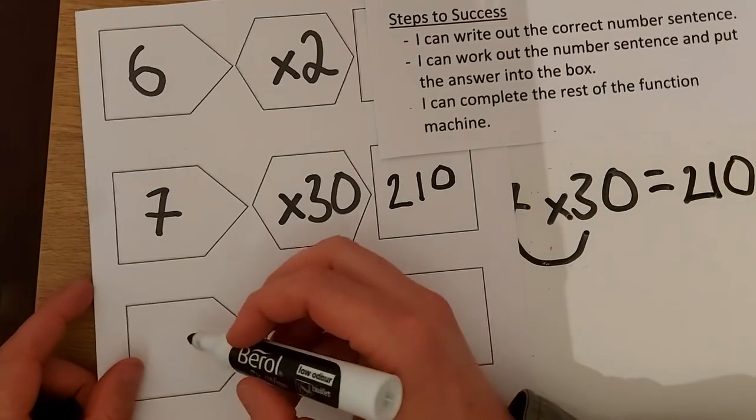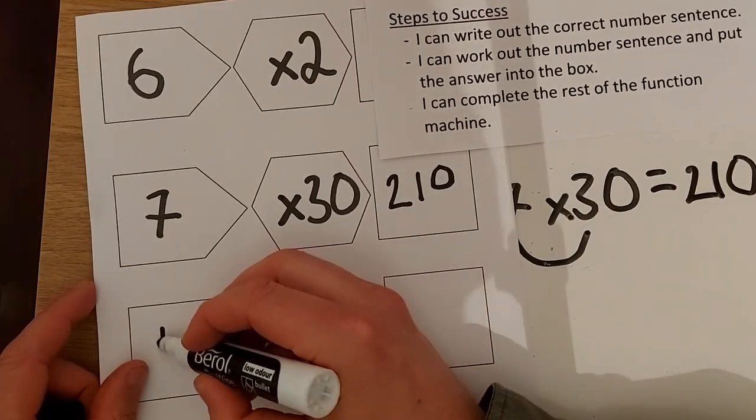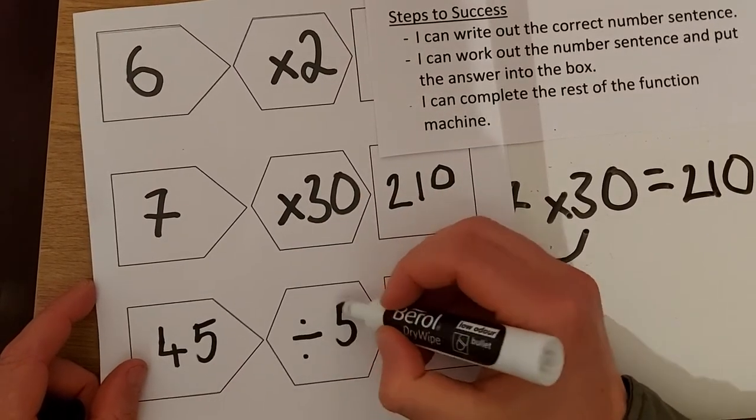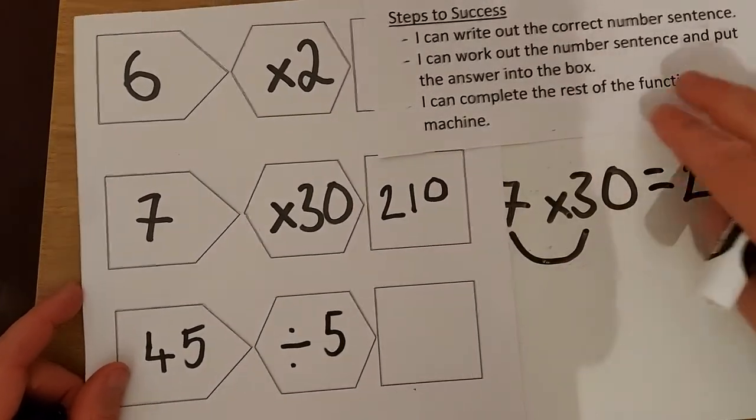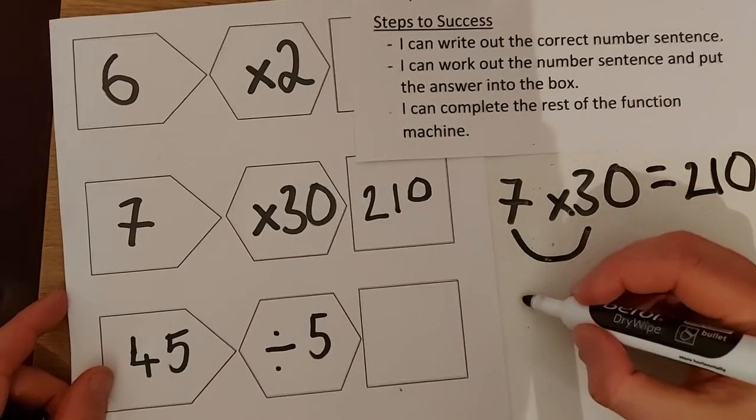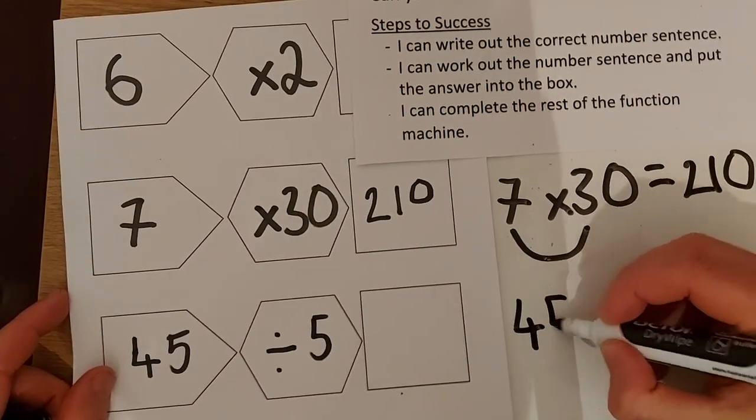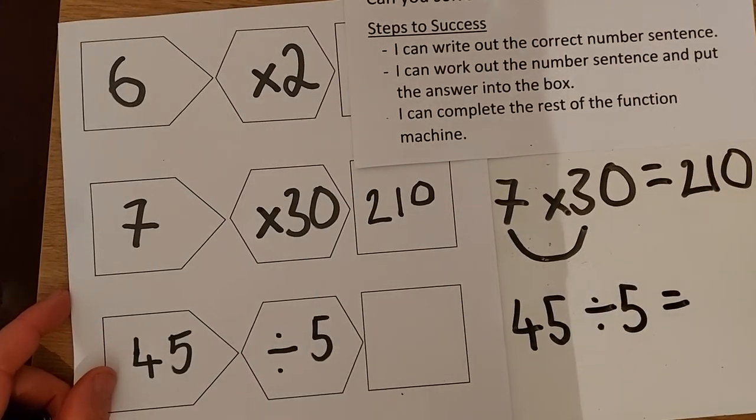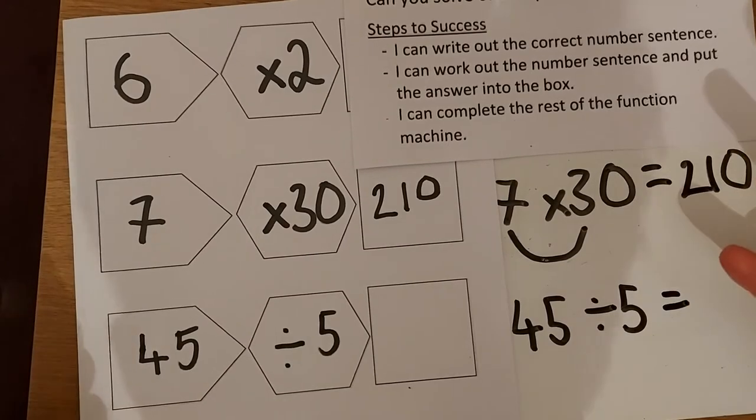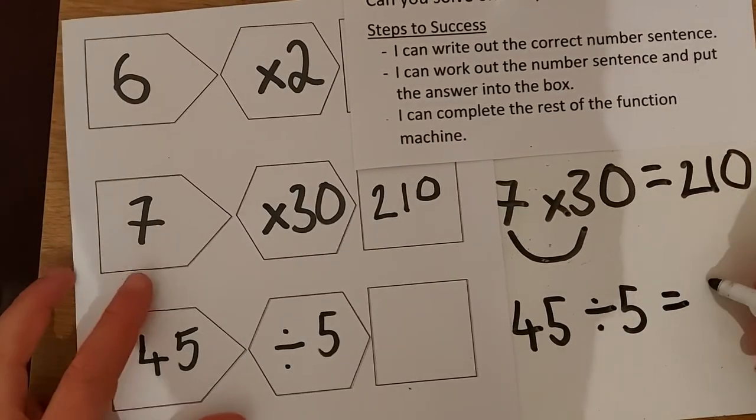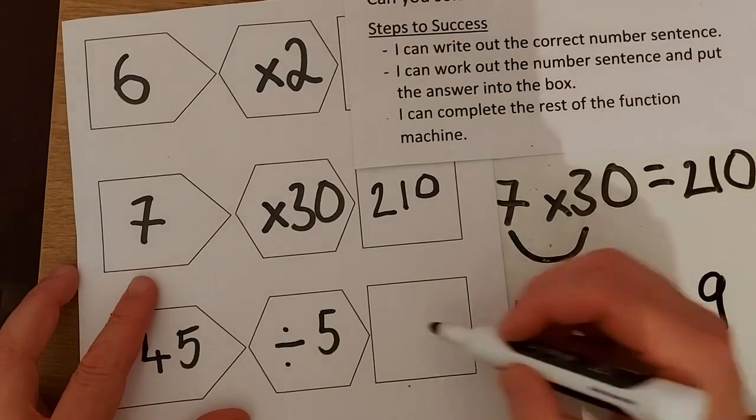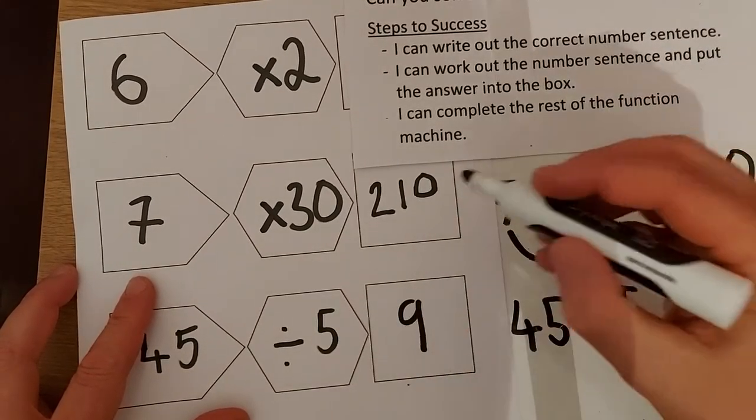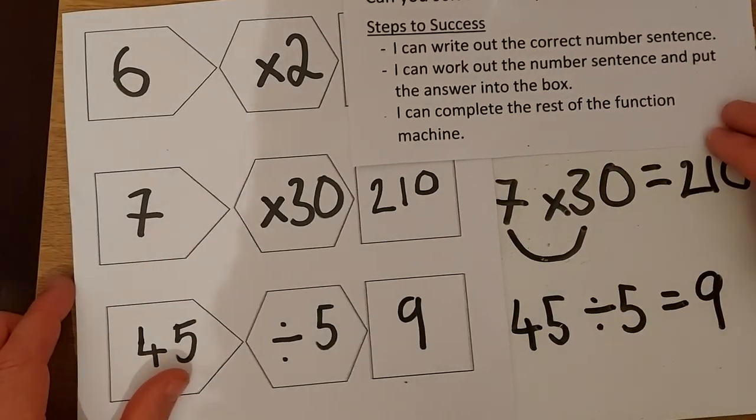You might have another one. Let's do 45 divide by 5. You could have any of the four operations in here. The number sentence I'd need to write out here would be 45 divided by 5. Five, 10, 15, 20, 25, 30, 35, 40, 45. So I've done nine jumps, the answer would be 9. That's the first step, second step write it in, and then I might have some more.